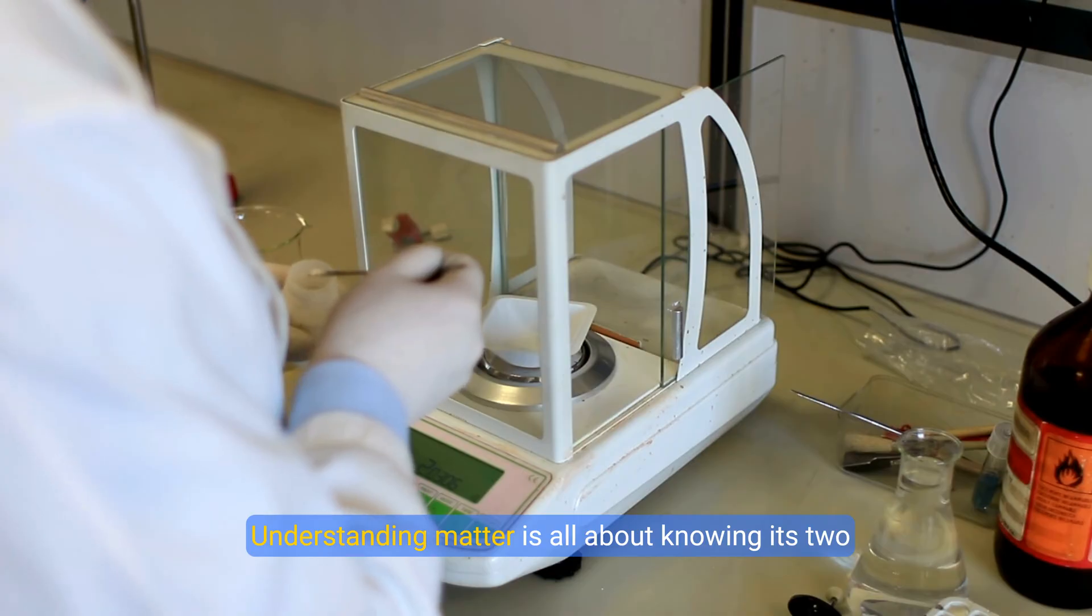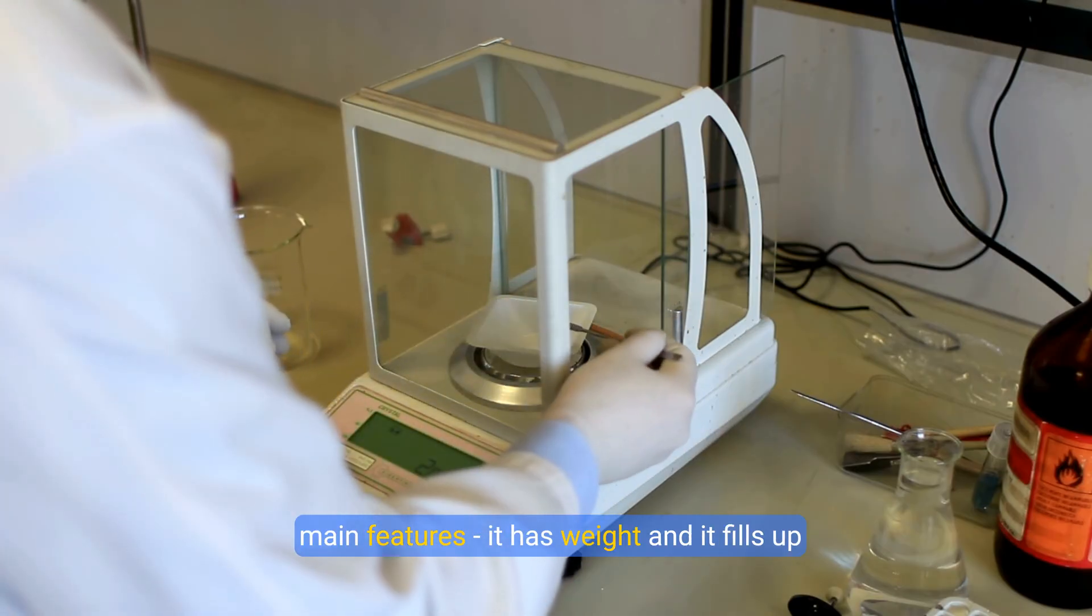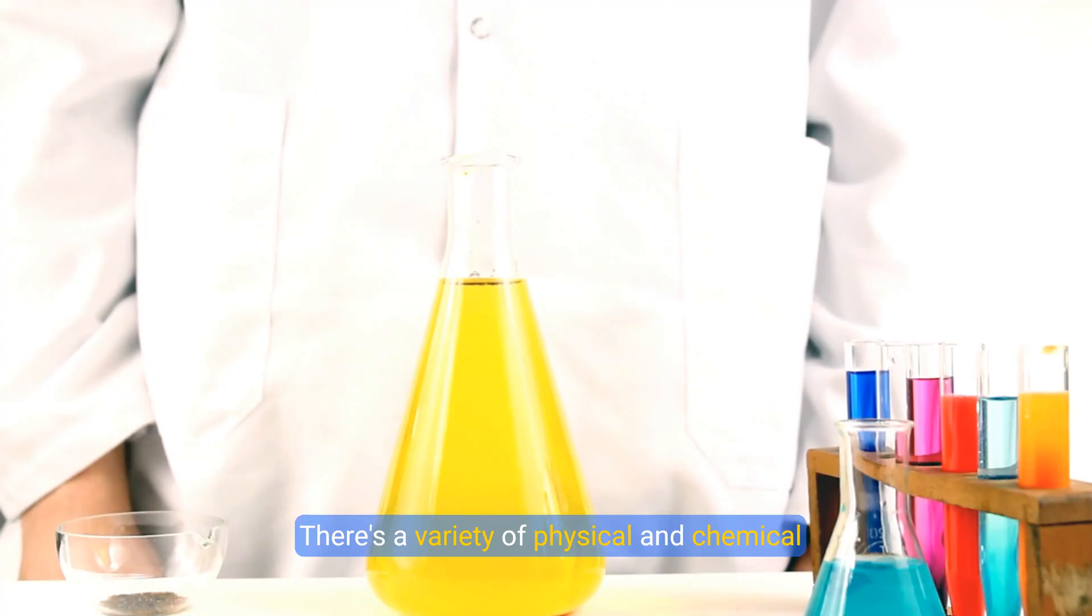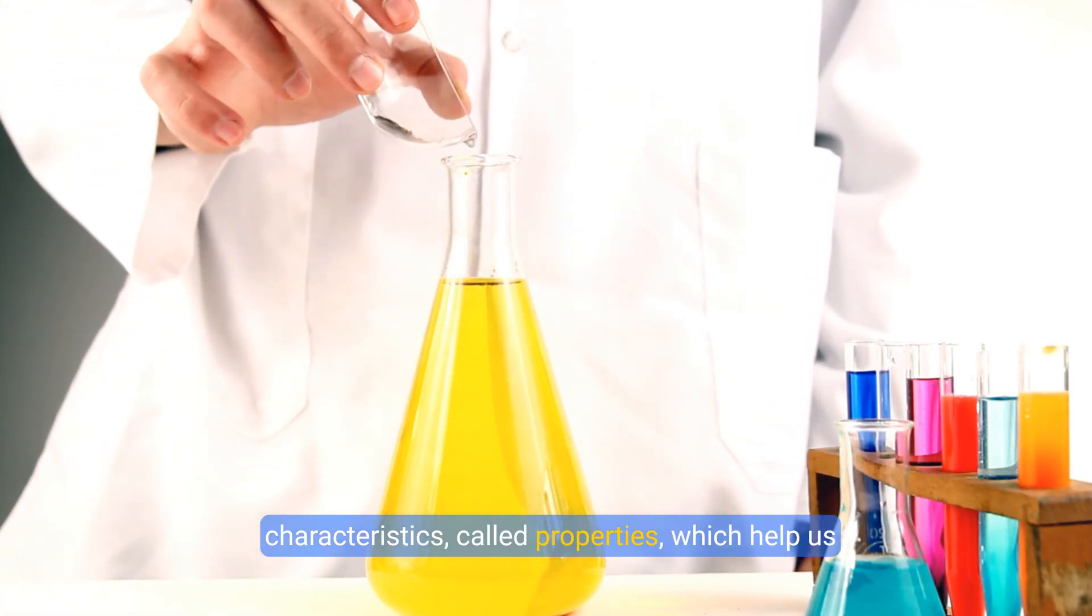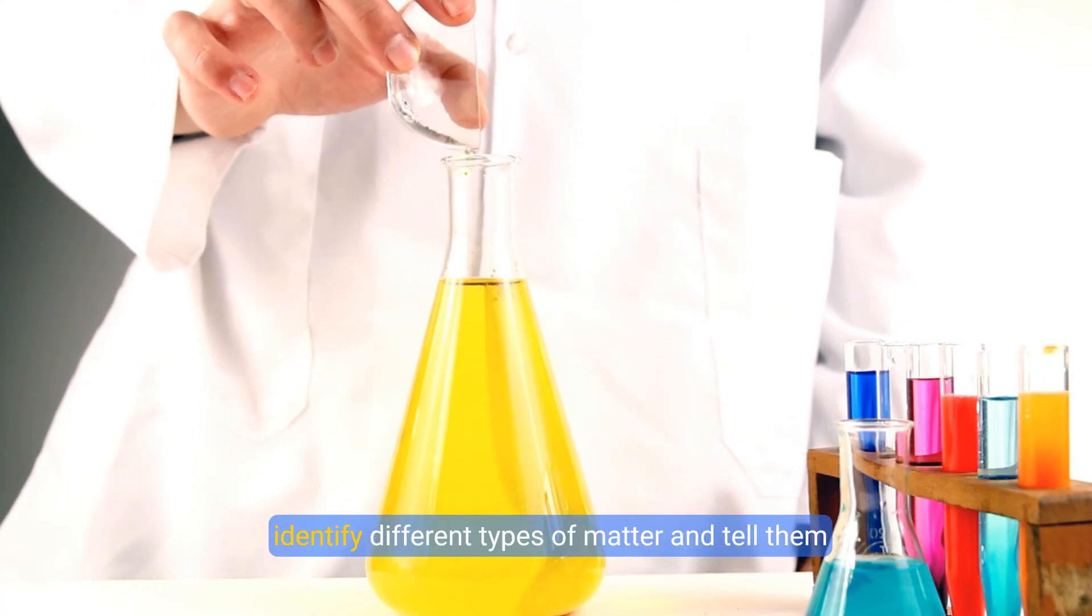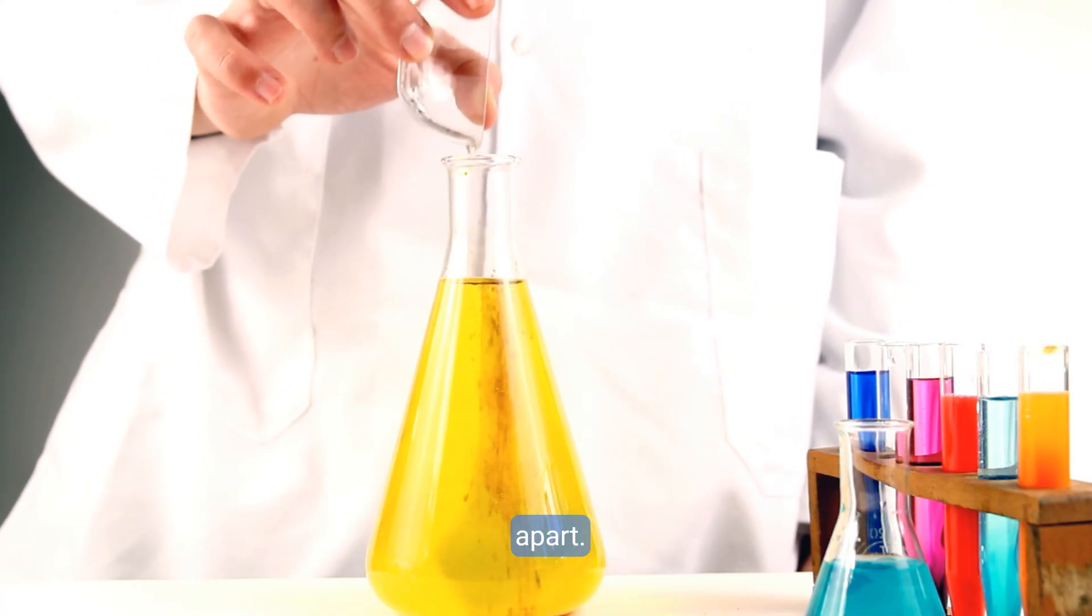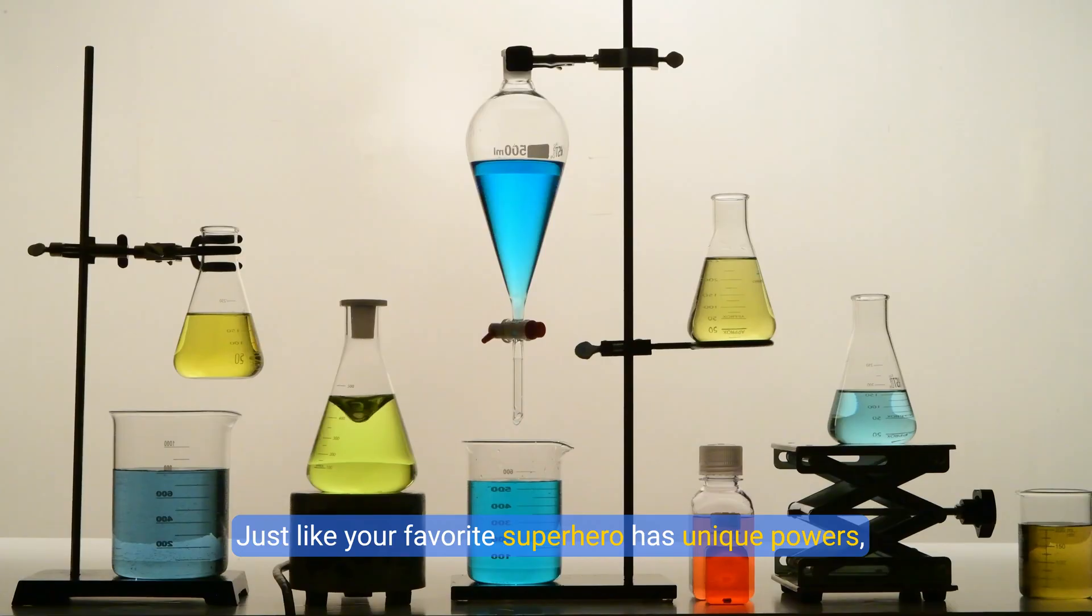Understanding matter is all about knowing its two main features: it has weight and it fills up space. There's a variety of physical and chemical characteristics called properties which help us identify different types of matter and tell them apart.